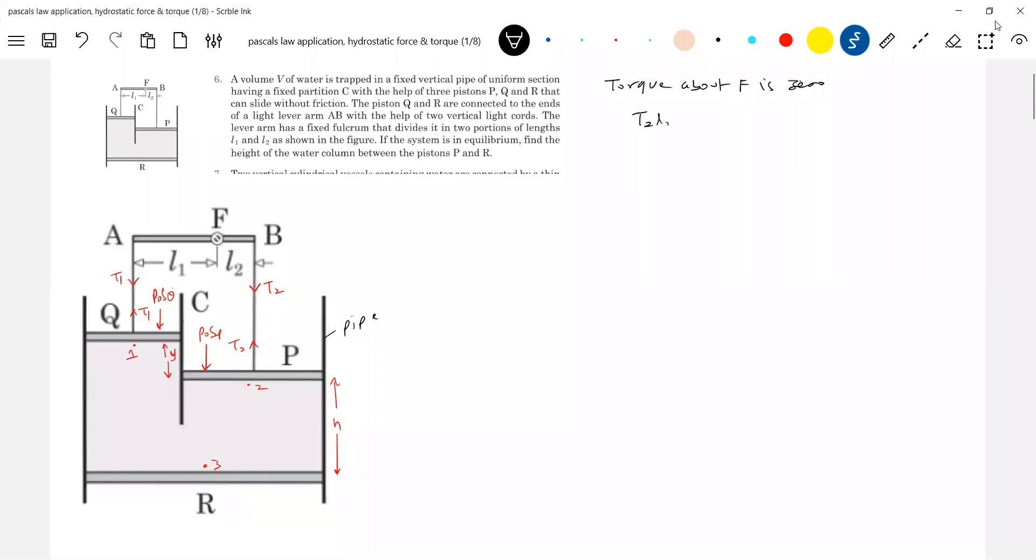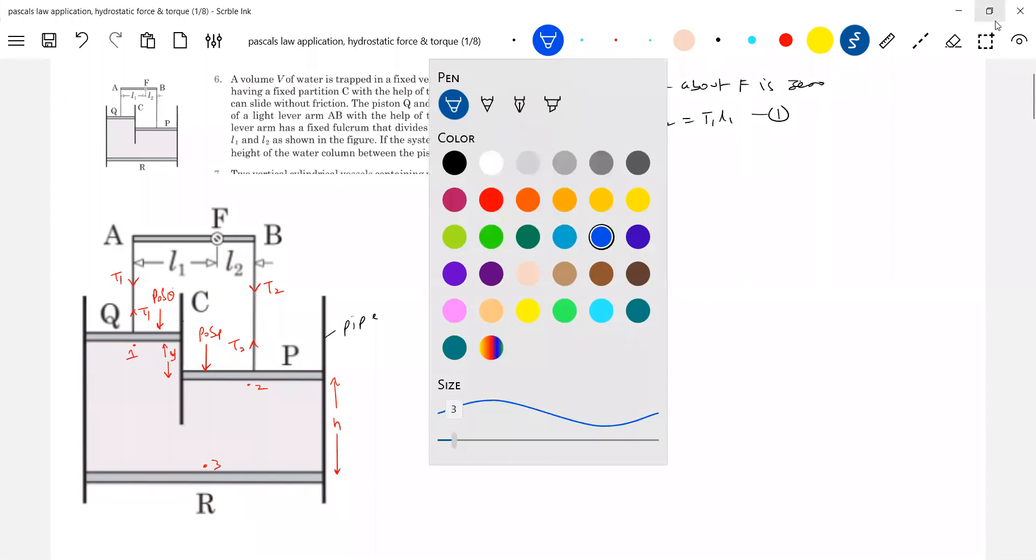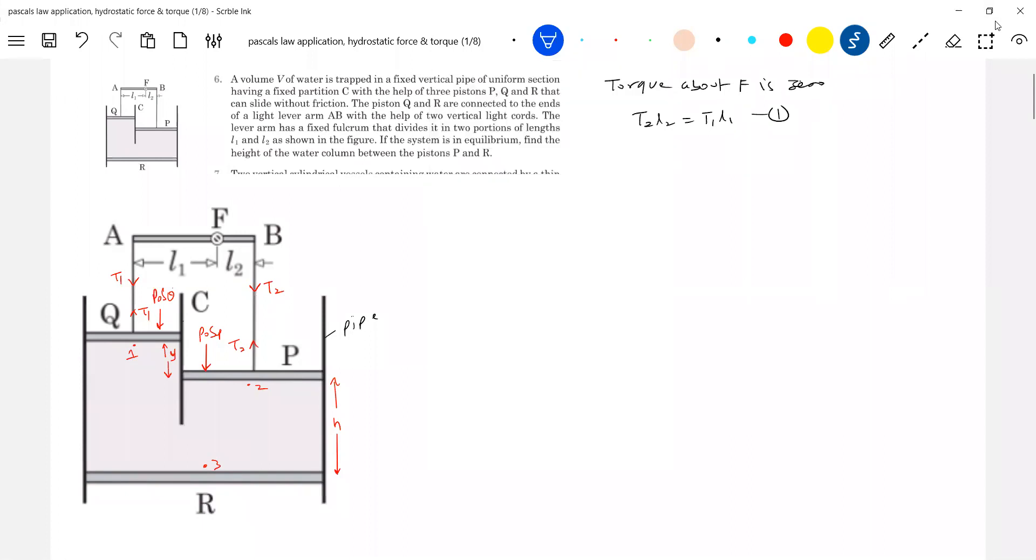So T2·L2 is equal to T1·L1. Call this equation one. Next we'll look at the piston Q. What are the forces acting here? The pressure force will exert a force. The liquid will exert force on all surfaces it comes in contact with. I'll agree. Now I'm able to show arrows like this.